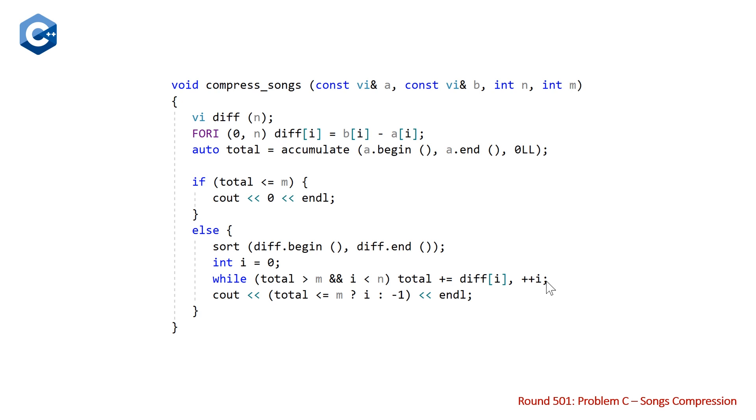Once we finish this while loop, we're just going to output either the index that we got to, which is going to be equal to the number of songs that we compressed, or negative one if we still have our total not being less than or equal to m.